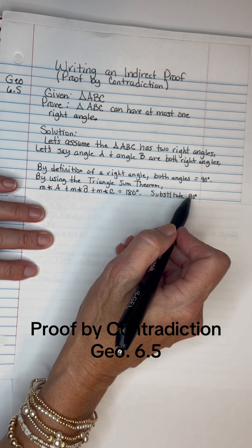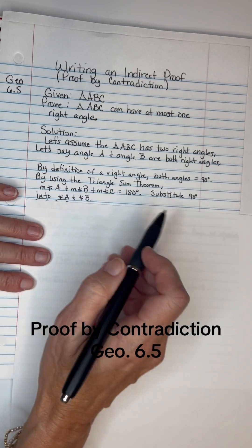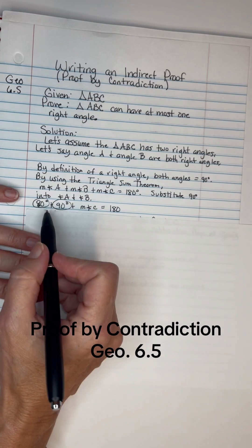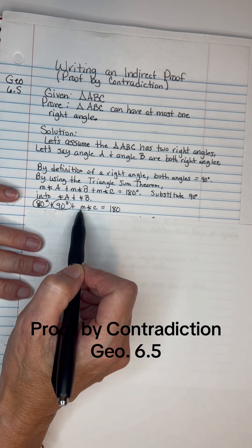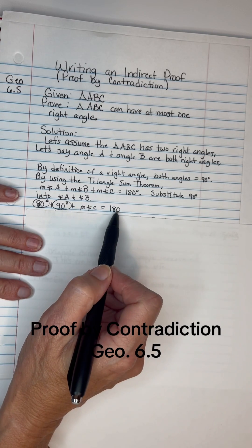If we substitute 90 degrees into A and B, it'll look like this. Angle A is 90. Angle B is 90. Angle C we're looking for must equal 180.